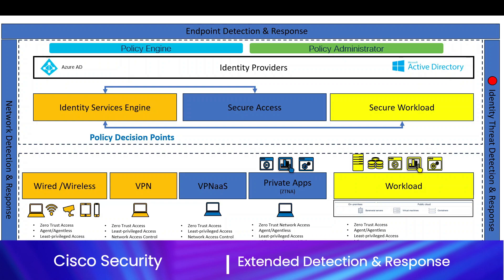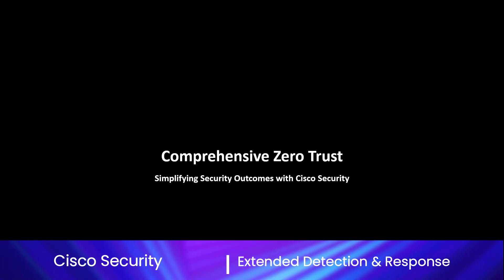XDR ties everything together — network telemetry, email detection and response, identity context, and device context. If a threat came in through an email attachment, was executed, escalated privileges, and then moved laterally within the network, you capture all of that detail and view it through an attack chain perspective, giving you the best possible view of the attack. That's comprehensive zero trust — the goal is to simplify outcomes leveraging Cisco security while respecting other existing investments to make the overall solution better.